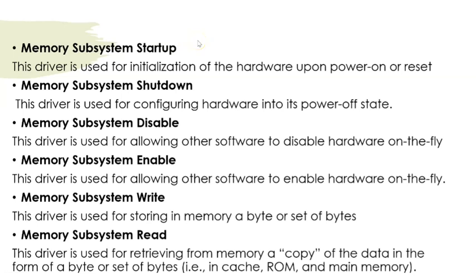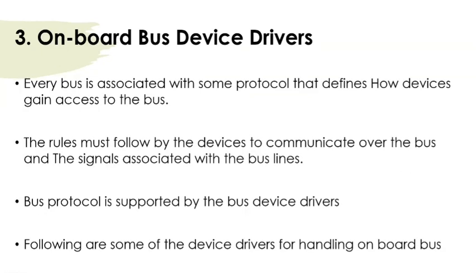Some examples of memory device drivers: memory subsystem startup — used to start up a particular memory area. Memory subsystem shutdown — when the system goes to a power-off state, memory is also turned off. Memory subsystem disable — disables a particular area of memory. Memory subsystem enable — enables that area. Memory subsystem write and memory subsystem read — for reading and writing data to a memory area. When writing your examination, focus on the names of these device drivers and understand their meanings.